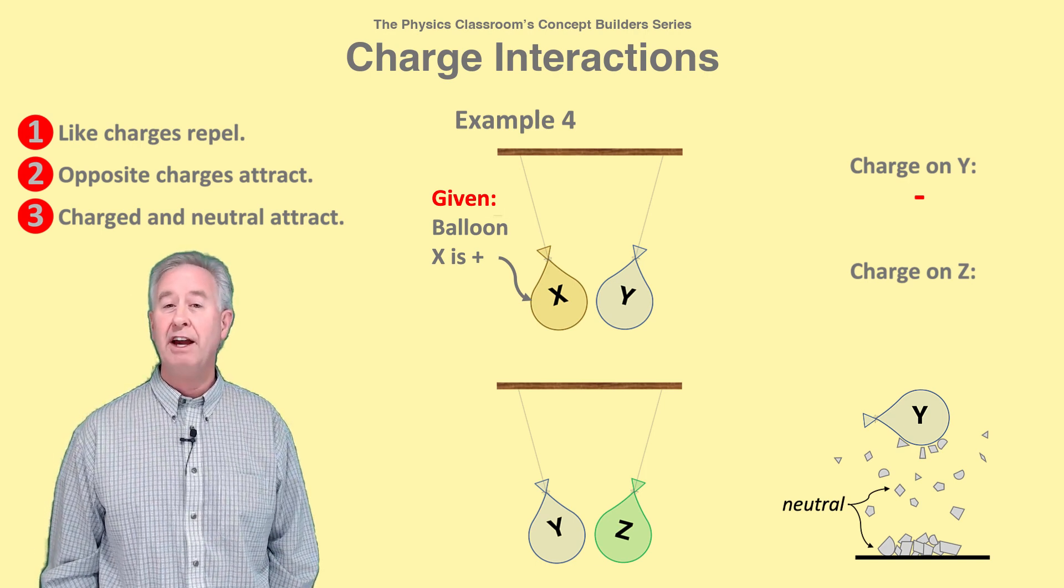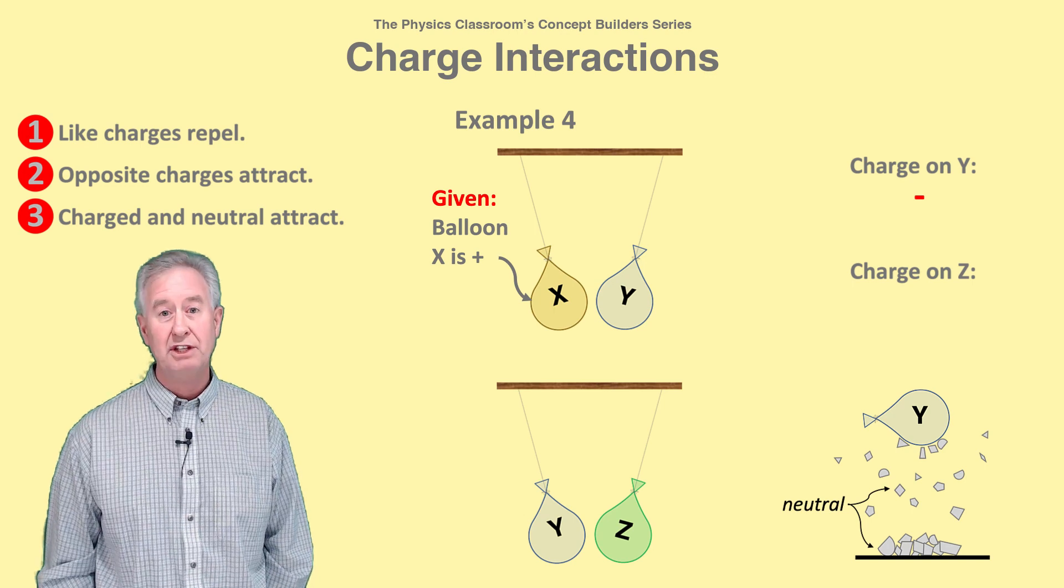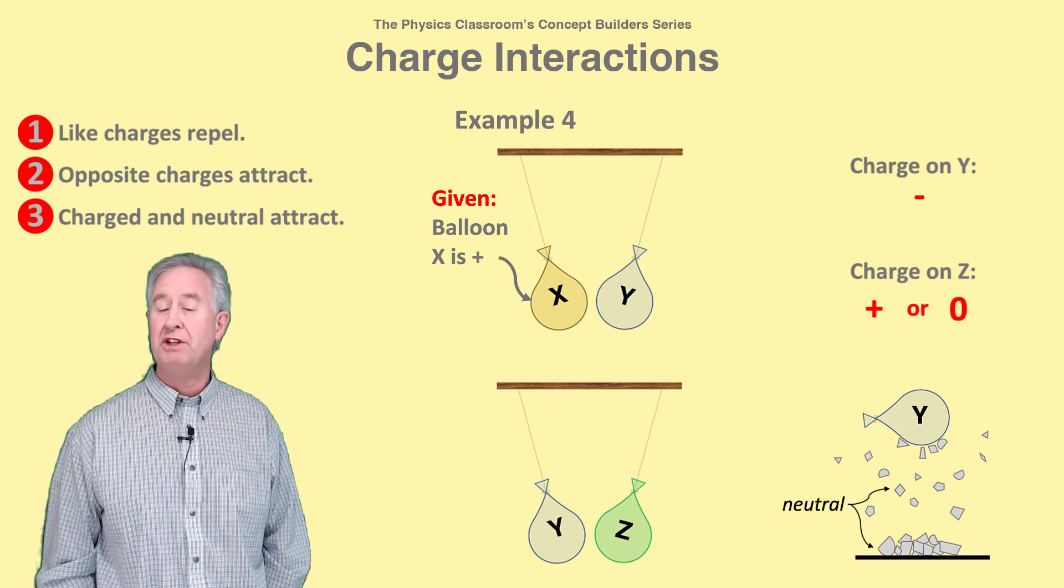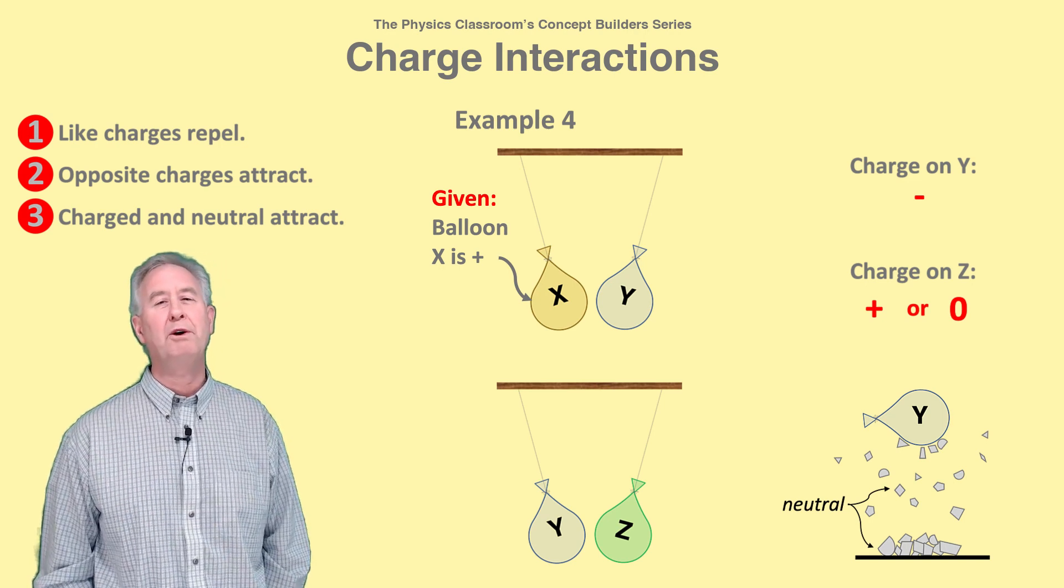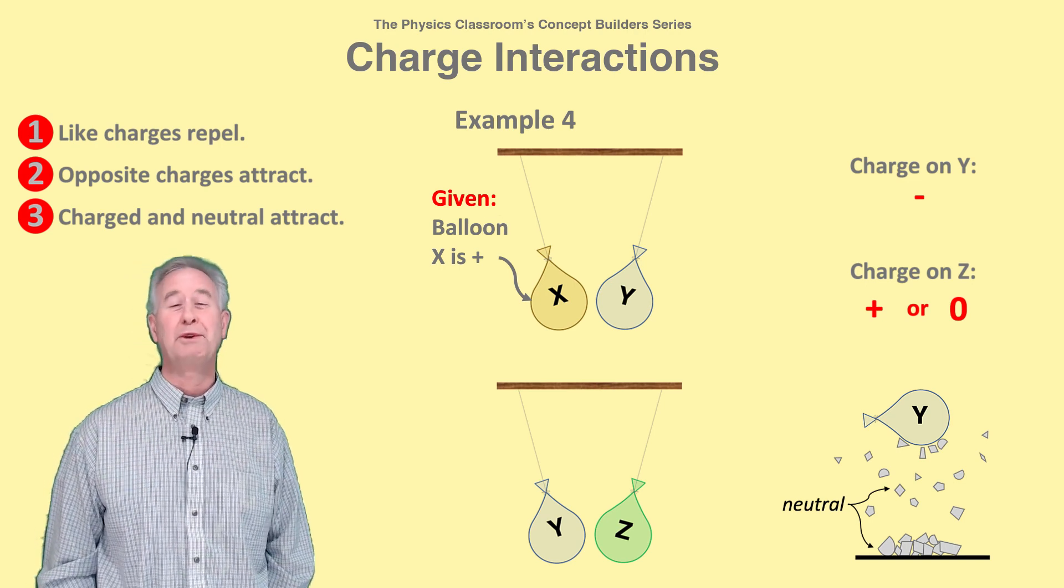Finally, the fact that negative Y and Z attract means that Z's charge must either be positive according to rule two or neutral according to rule three.